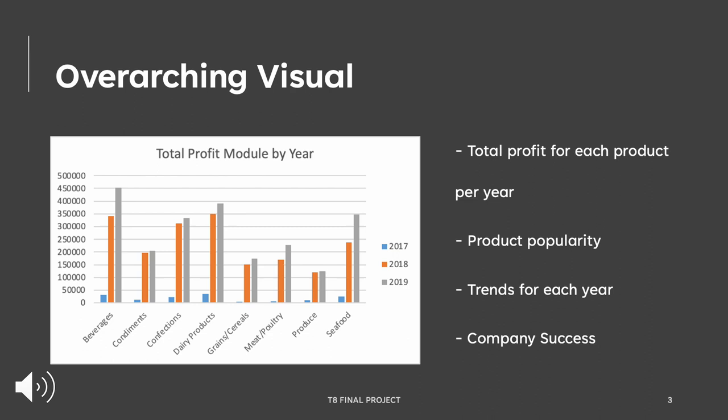Beverages, seafood, and dairy products are some of Northwind Traders' most popular products, found in Visual 1. By limiting sales to popular products, Northwind Traders can save money and focus on those popular sales. By looking at the number of products sold, Northwind Traders can measure their success rate. We see an increase in sales over 2017 to 2019, indicating the success of Northwind Traders' products and how well they will do in the future.